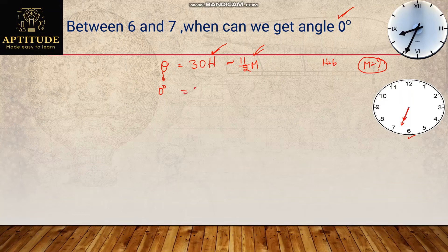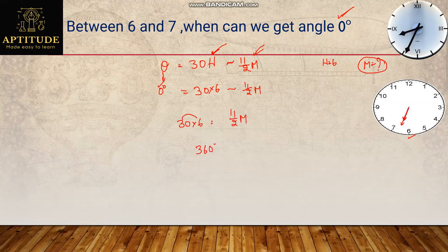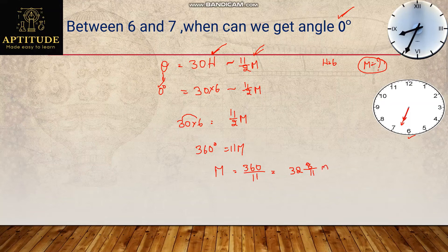Substituting: 0 = 30 × 6 minus 11/2 · M. Moving terms: 30 × 6 = 11/2 · M, so 180 = 11/2 · M, giving 360 = 11M, so M = 360/11. Writing as a mixed number: 360 ÷ 11 = 32 and 8/11, because 11 × 32 = 352, plus 8 equals 360 exactly. So we get 0 degrees between 6 and 7 at exactly 6 hours 32 8/11 minutes.